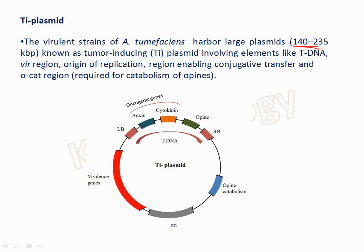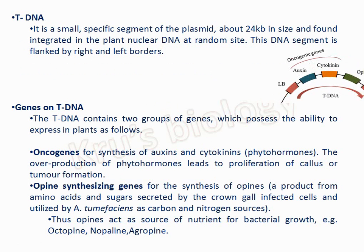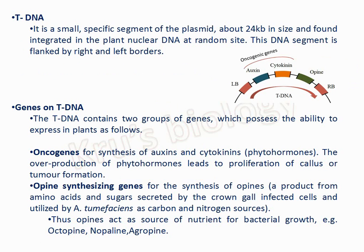The Ti plasmid is a tumor-inducing plasmid with a size of 142 to 235 kilobase pairs. The Ti plasmid contains the T-DNA that is transferred into the plant, the Vir region where virulence genes are located, the origin of replication (ori), and the region for opine catabolism required for the catabolism of opines.